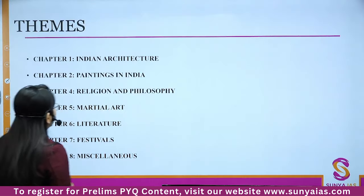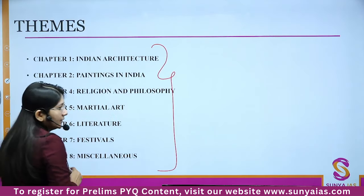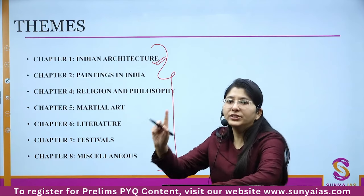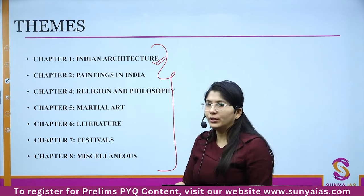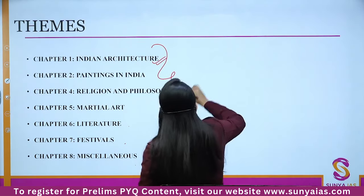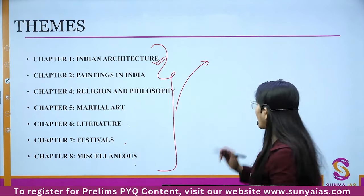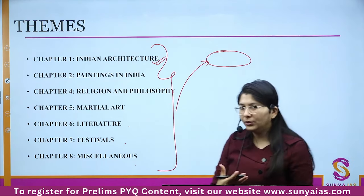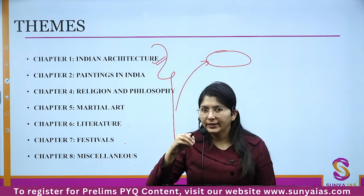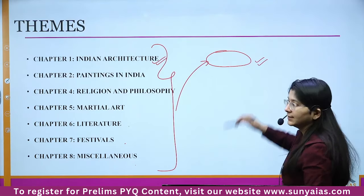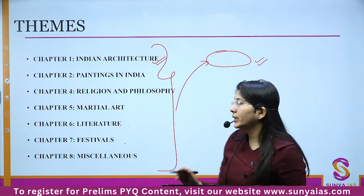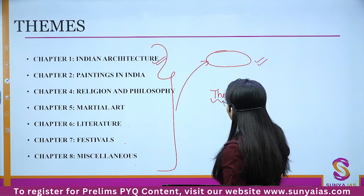We've divided the complete Art and Culture syllabus into eight chapters: Indian architecture, paintings, religion and philosophy, martial arts, literature, festivals, and miscellaneous topics. The strategy is: as soon as I show you a question, read it, think of the answer in your own mind, and then we'll see the correct answer along with the background story. We'll also note down the particular theme being tested.